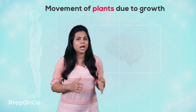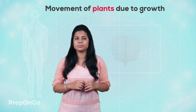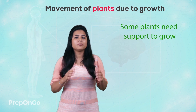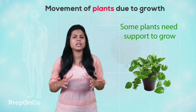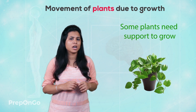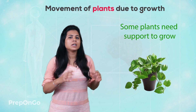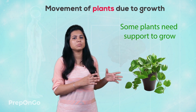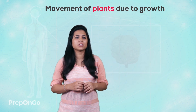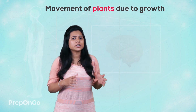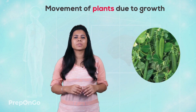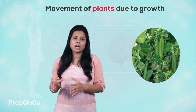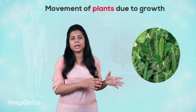Now some plants cannot grow independently, which means they need support. We all have seen in our day-to-day life the money plants which we have in our house — they need support to climb up, either climbing fences or nearby plants. One such example is the pea plant, which climbs the nearby plant or the fences nearby to it.